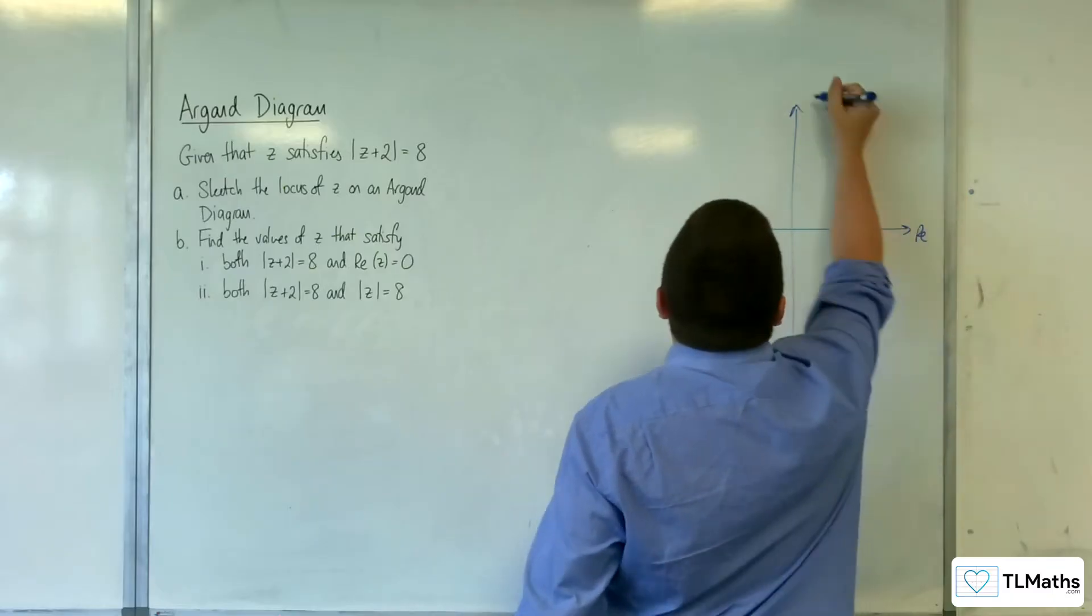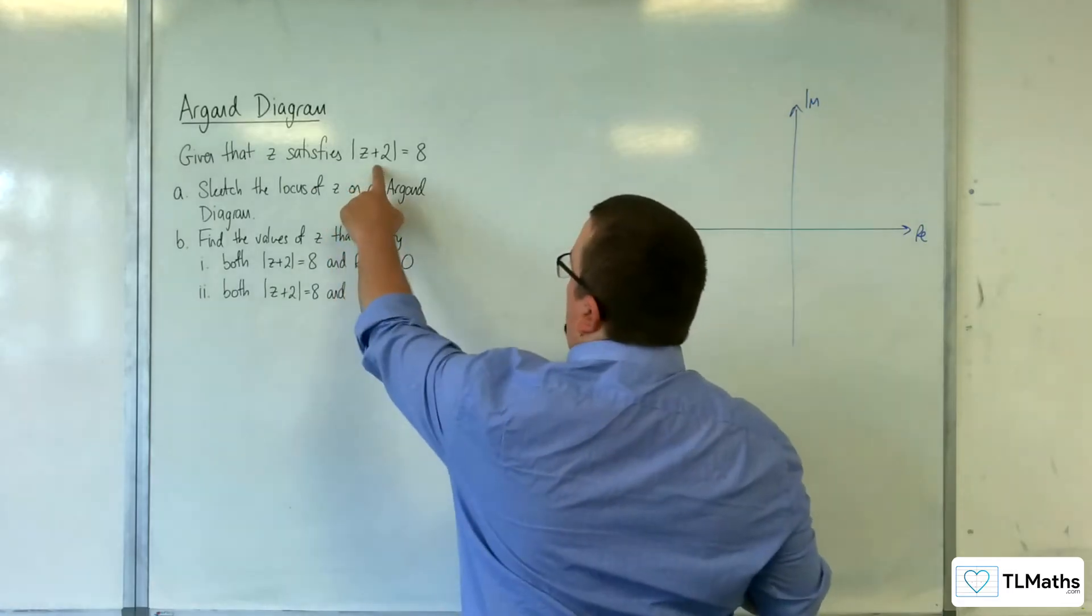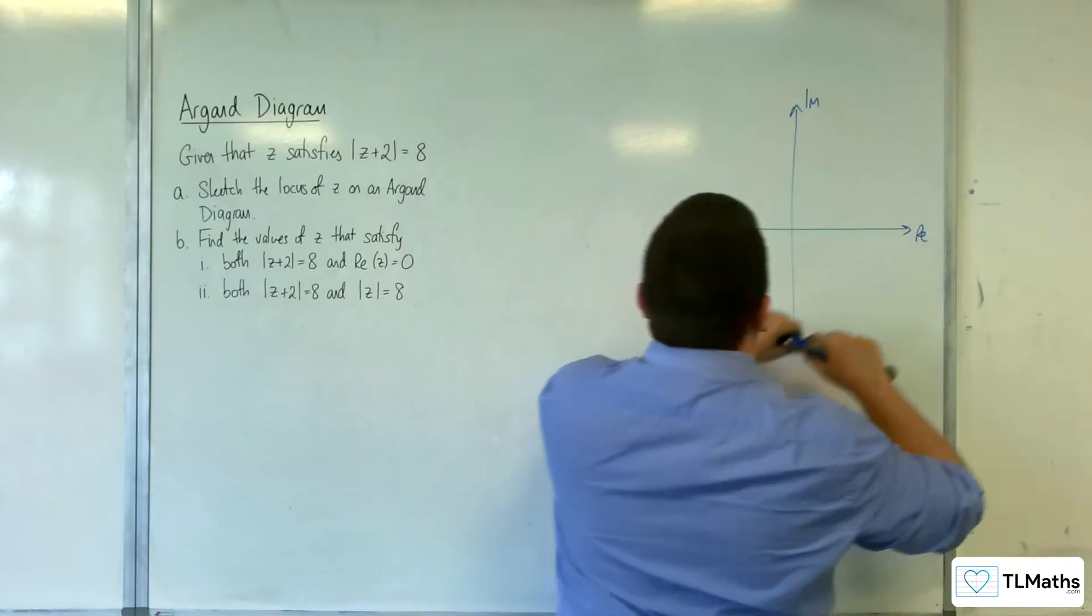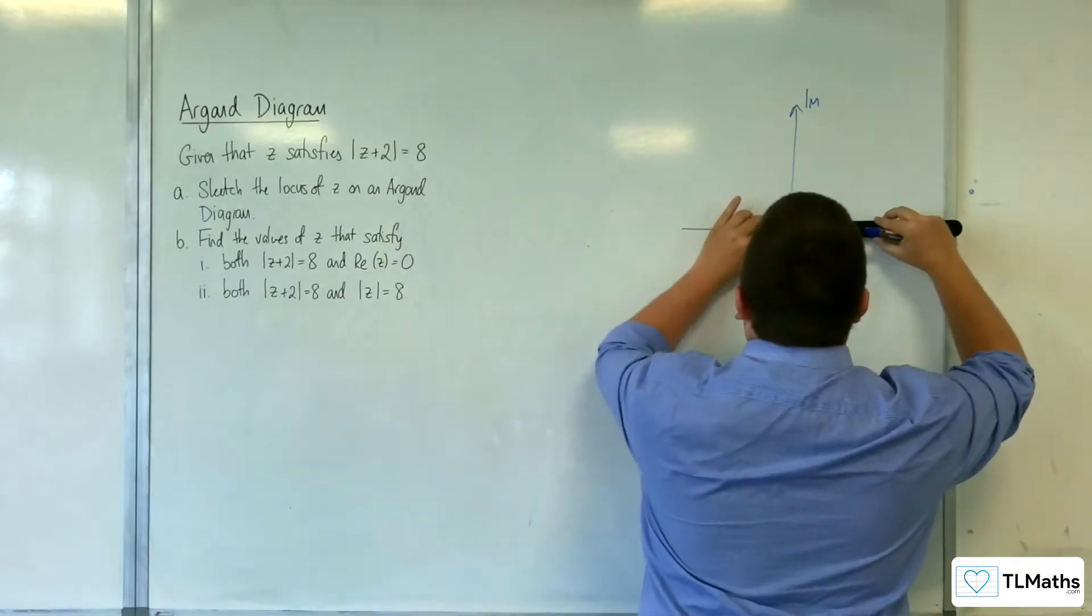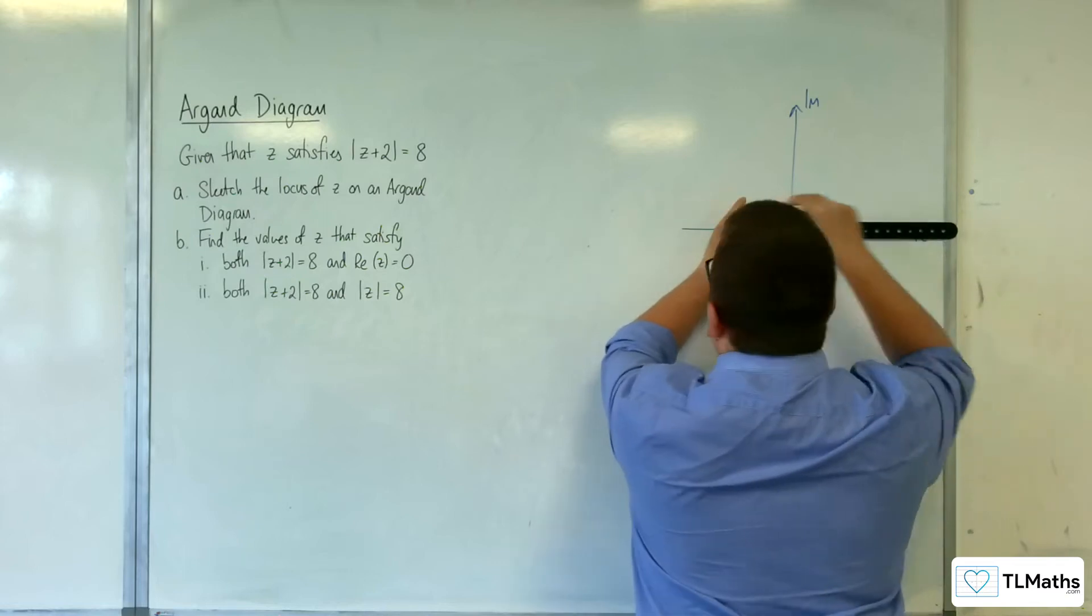So, first of all, real axis, imaginary axis. So it's going to be a circle centred at minus 2 on the real axis. So, we'll try and do this with accuracy. And we've got a radius of 8. So, say that represents 8.